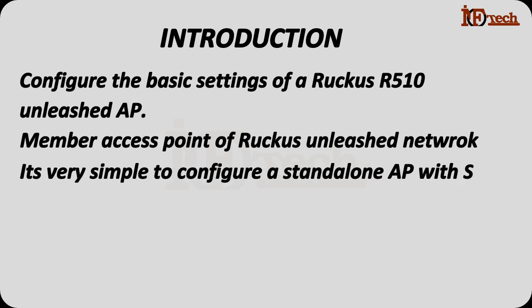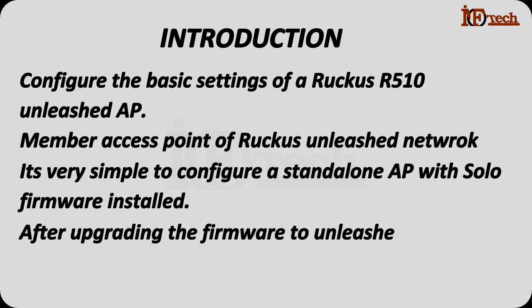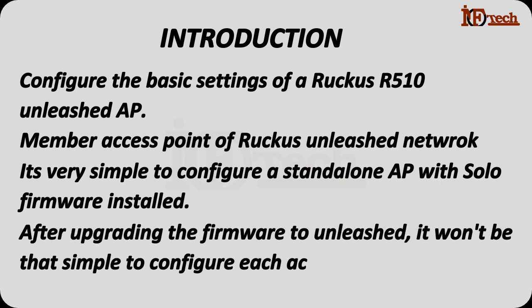Actually, it is very simple to configure the basic settings of a Ruckus access point working as a standalone AP with solo firmware installed. When we configure the settings of a Ruckus standalone access point, all we do is individually access the web management interface of each access point and then configure all the settings as per our requirements. But when we upgrade the firmware of these access points to Unleashed and join the Unleashed Network afterwards, then it will not be that simple to configure the basic settings of these access points by directly accessing the web interface of each access point.